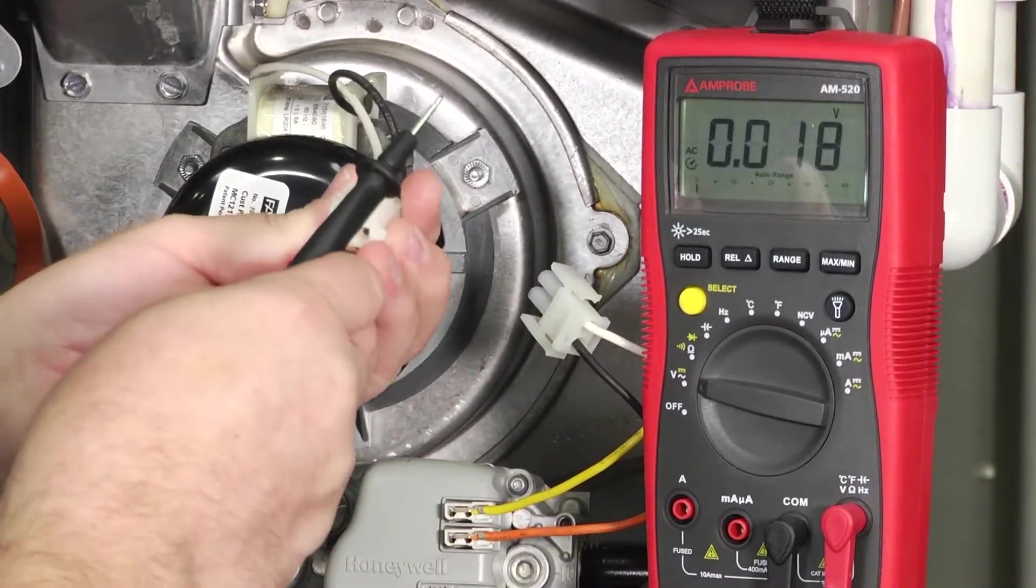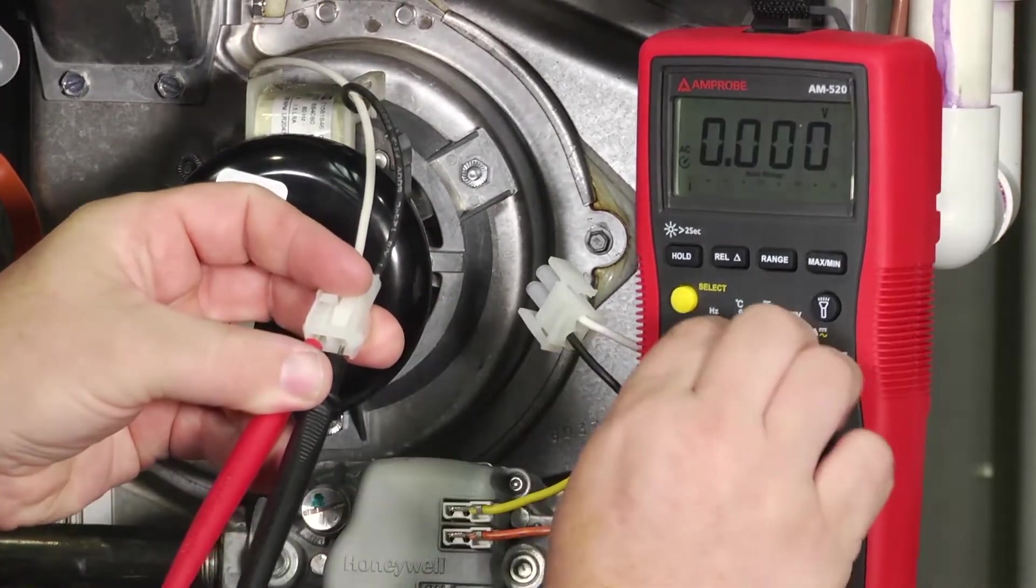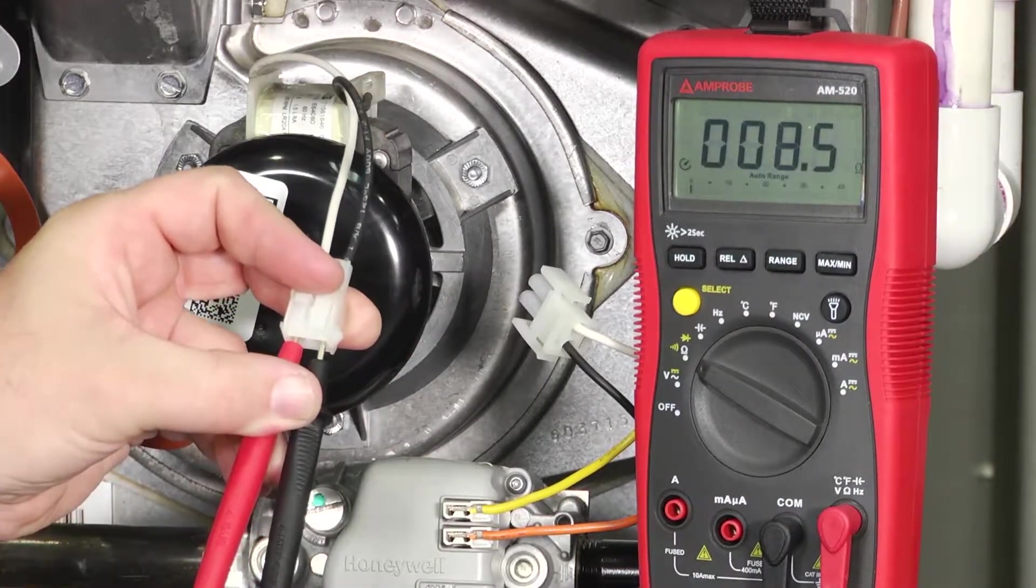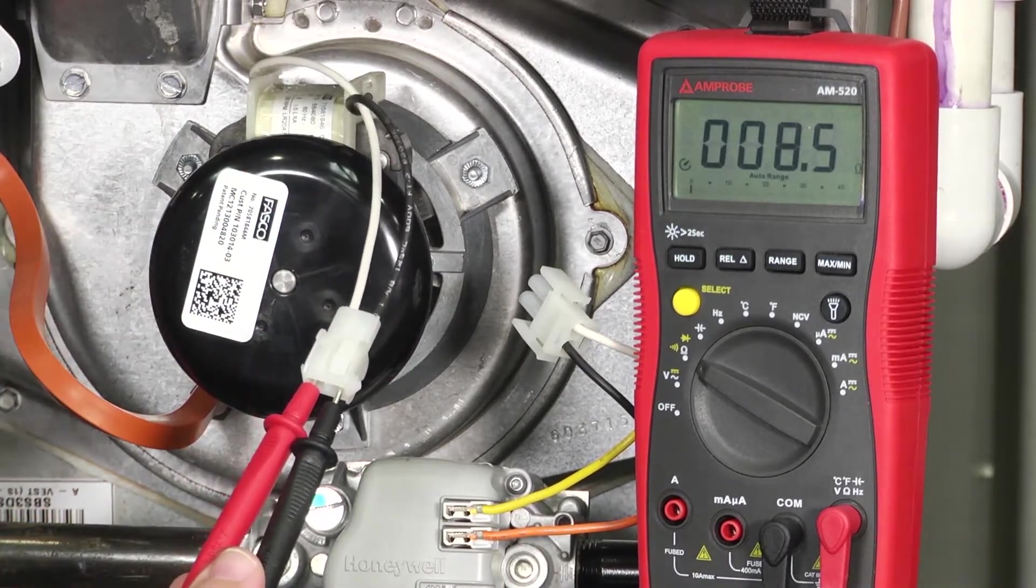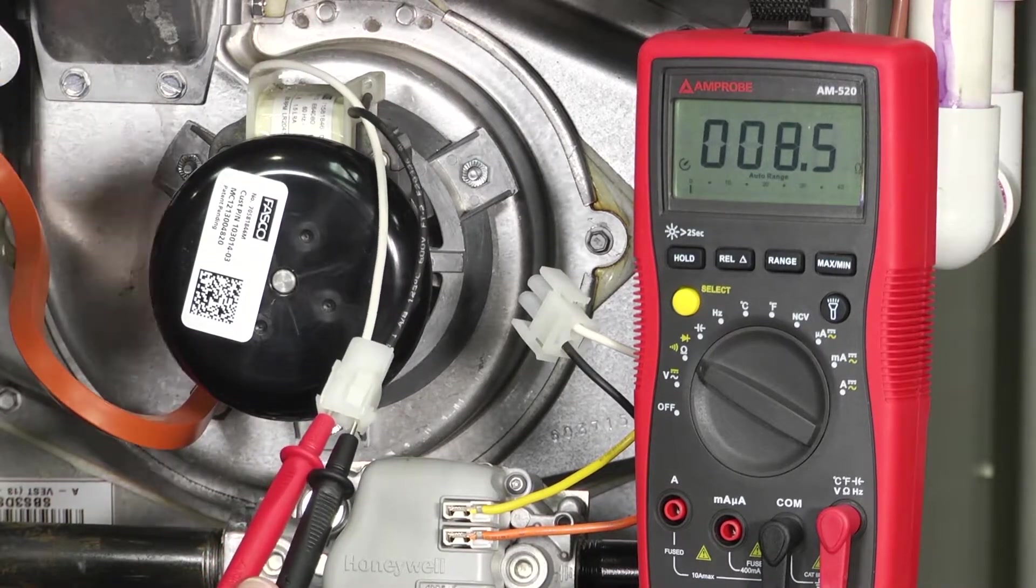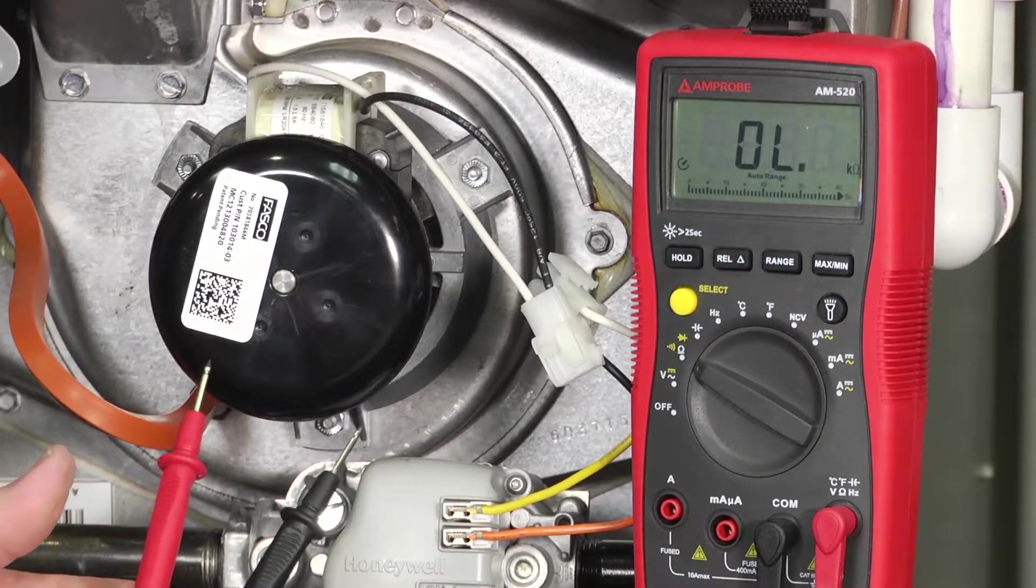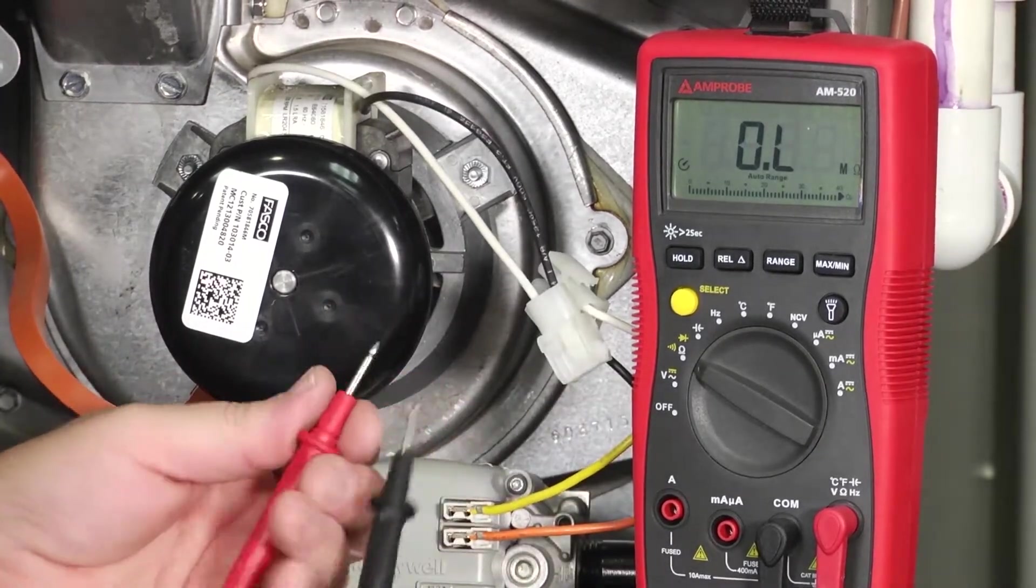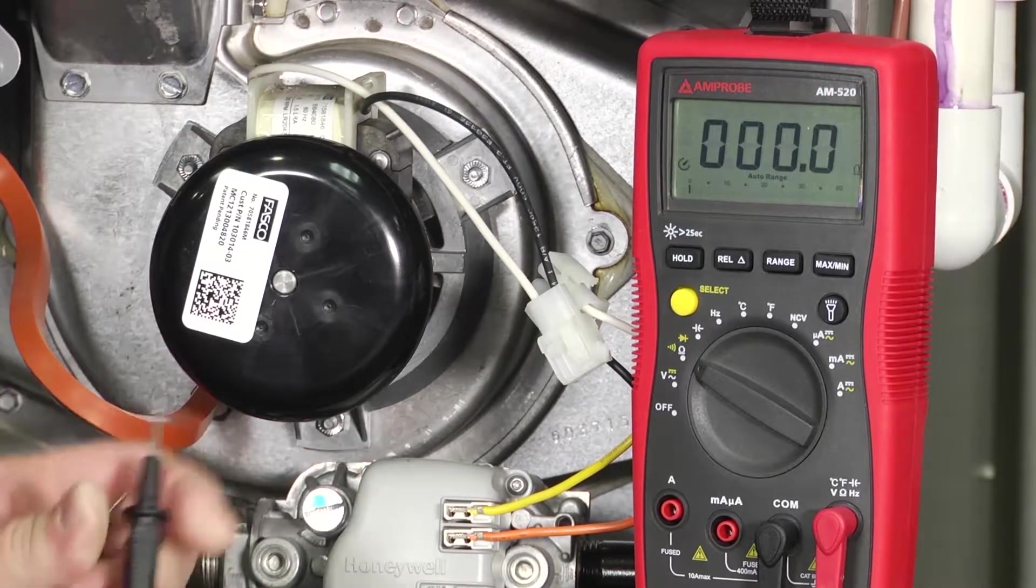Well we would come in here, stick our test leads right in here and ohm out the motor. Let's set it to the ohm scale. Here we're reading that the motor has 8.5 ohms of resistance. If this motor were open, meaning that the windings had broken, you'd have OL, open line or infinite resistance, kind of like you'd see here. And if the windings inside had shorted out to each other, you'd read zero ohms of resistance, kind of like you'd see doing this. So it gives us some features.